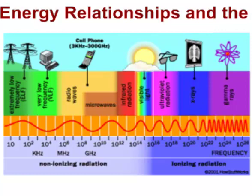Here's a diagram that shows the different types of waves of energy that we might experience here on Earth. We start at one end with very very long waves and at the other end with very very short waves and everything in between.